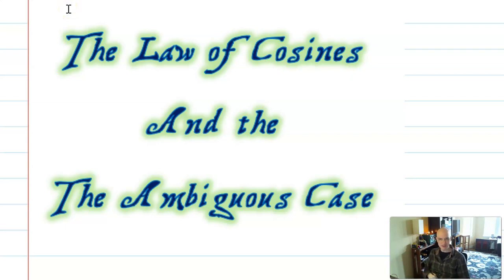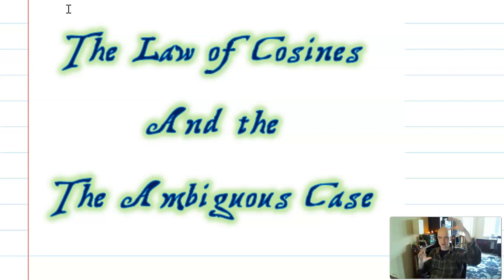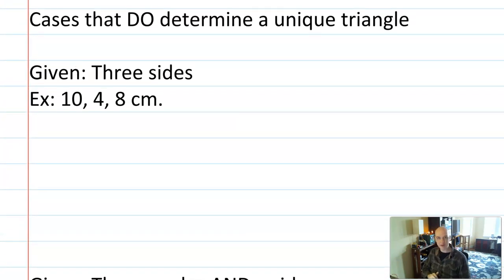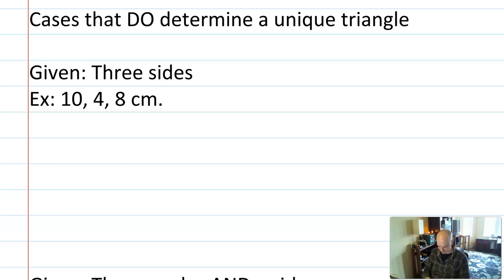One complication you might immediately come up with: say you only got three angles. That's three parts of the triangle, but you would not be able to find all the sides because the three angles don't determine a unique triangle — there are as many triangles as you want. So before we get into the case that is ambiguous, let's go through the cases that do determine a unique triangle and explain why, so that the ambiguous case can make more sense.